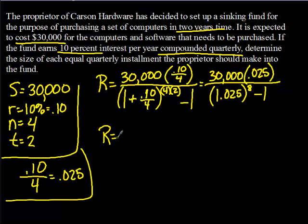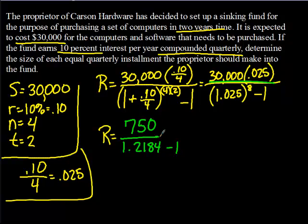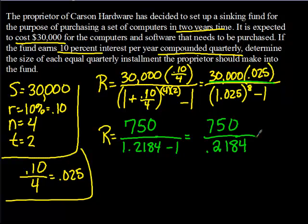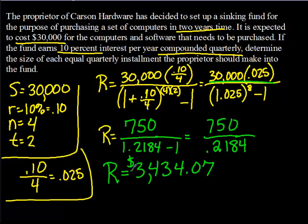Subtracting 1 from 1.2184 gives 0.2184. So we have 750 divided by 0.2184, which gives R equals $3,434.07. If this company makes quarterly payments of $3,434.07, by the end of two years, because of the interest, they will have $30,000 tucked away to buy these computer systems.